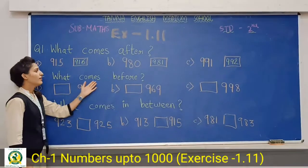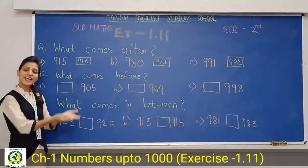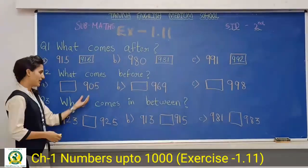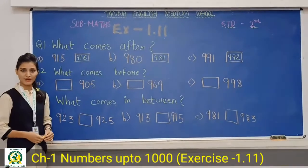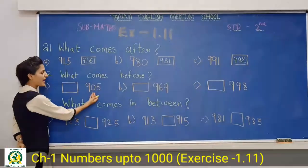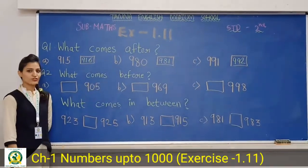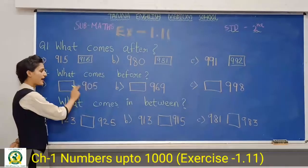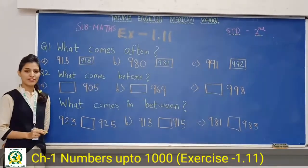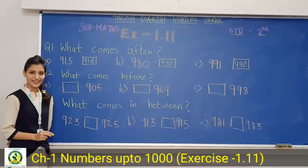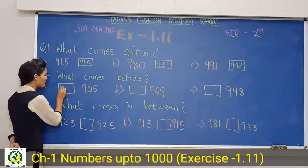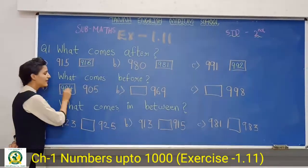Now, number 2. What comes before? Before means the previous number. If a number is given to you, what number comes before it? So, first one is 905. So students, what comes before 905? 905 ke pehle, 904. So we have to write 904, okay?